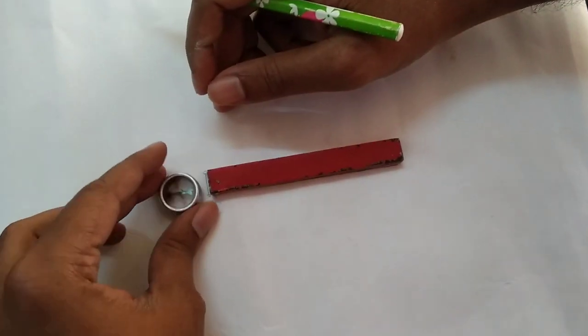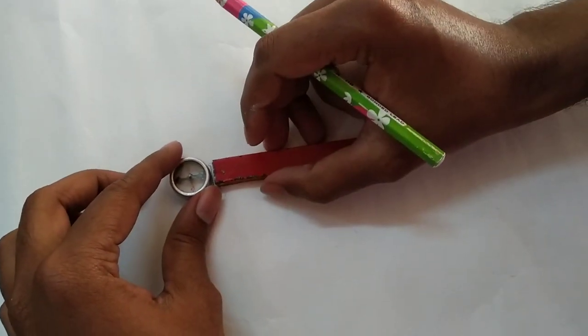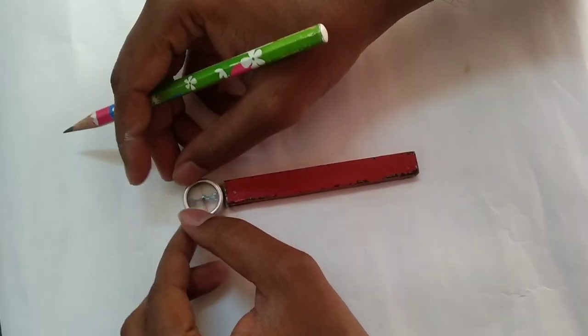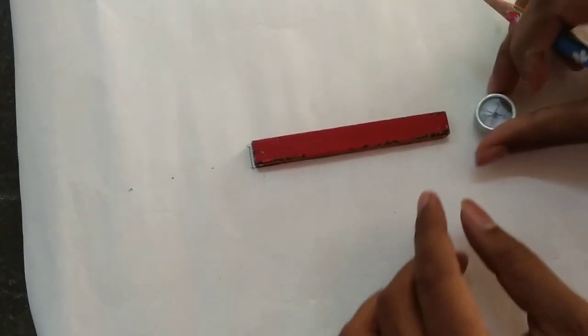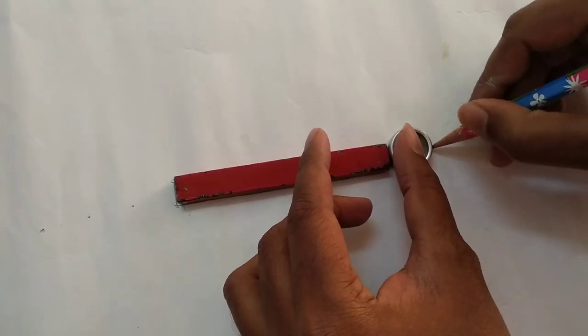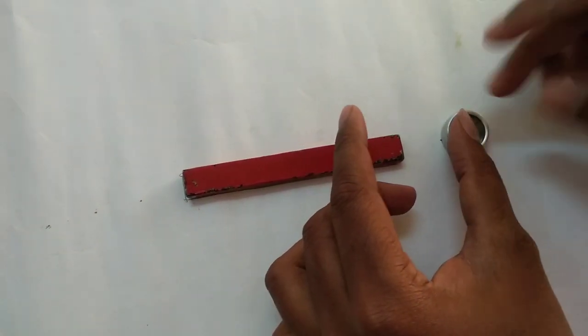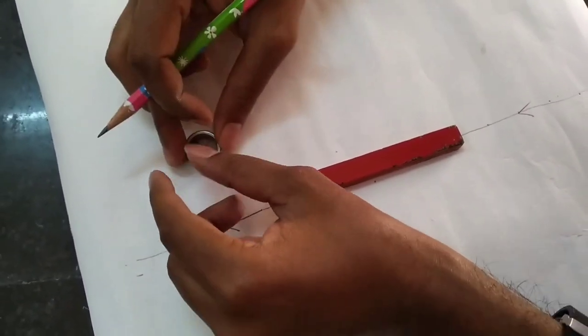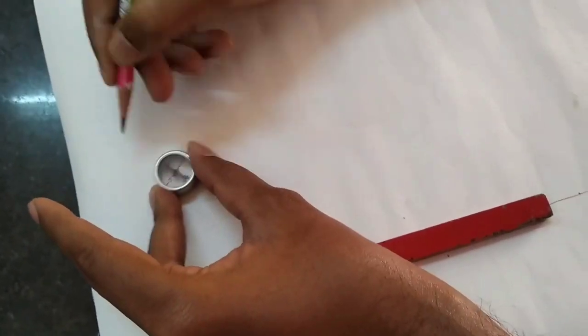Now by using the pencil I can start drawing. You can now see that the direction of this compass needle, the direction is from north to south. You can now observe the deviation and mark the points.